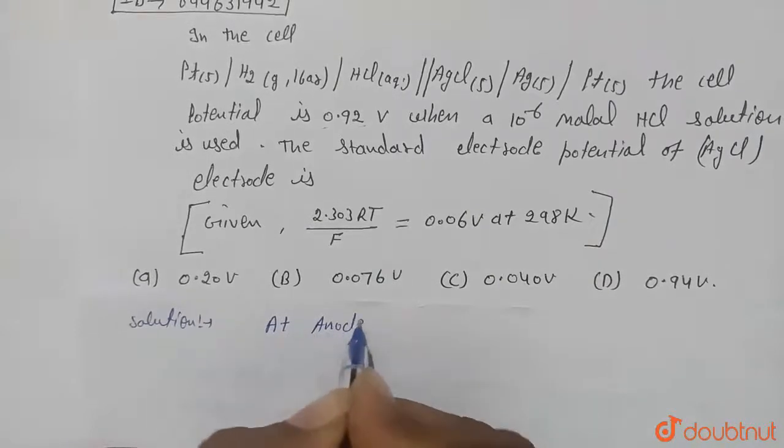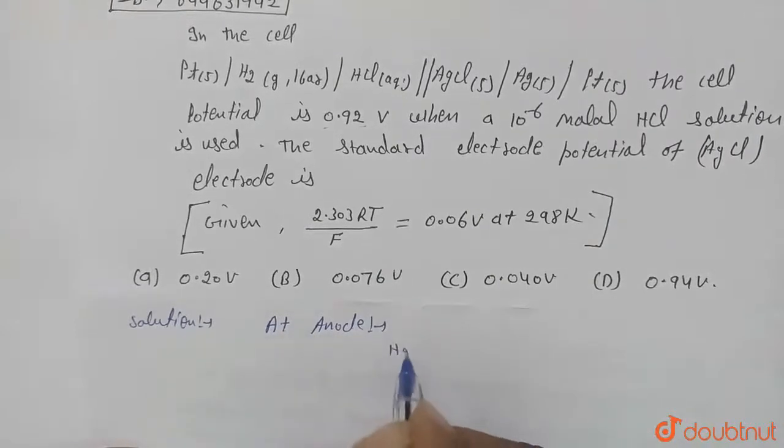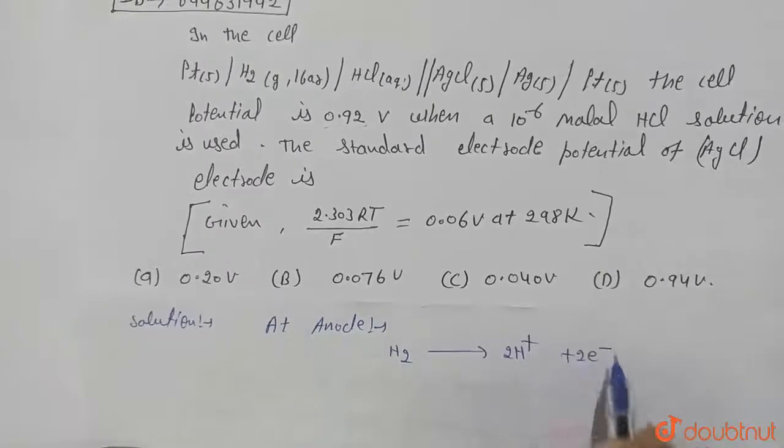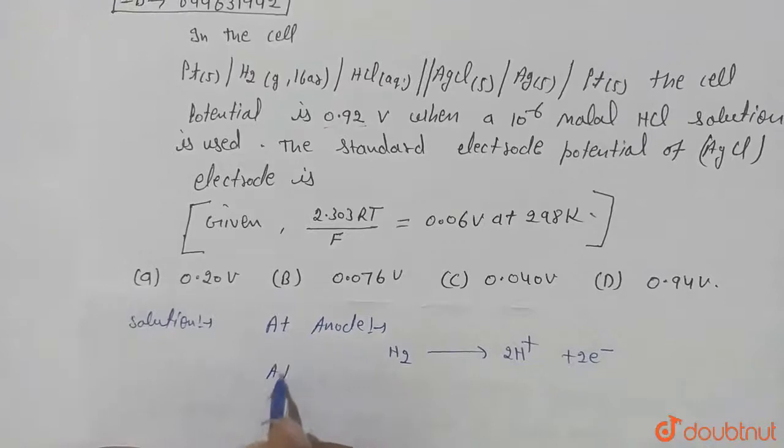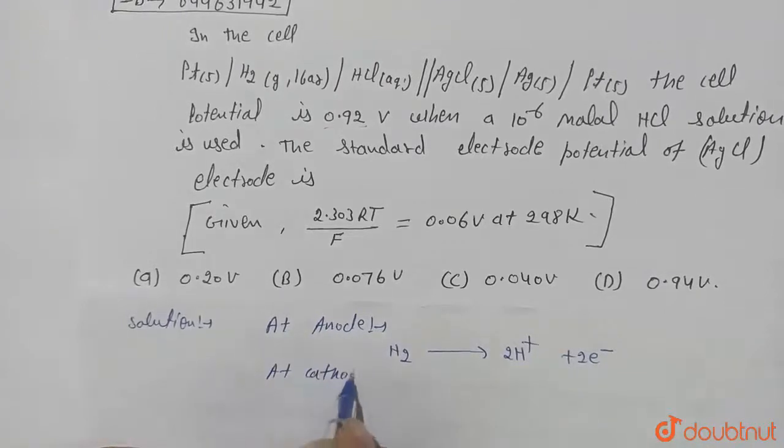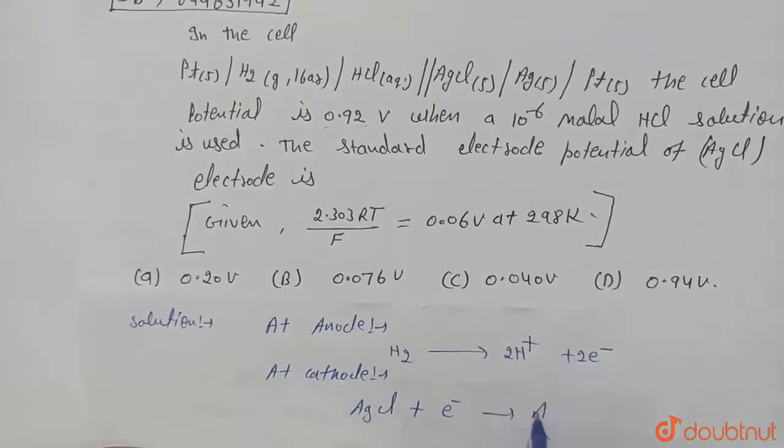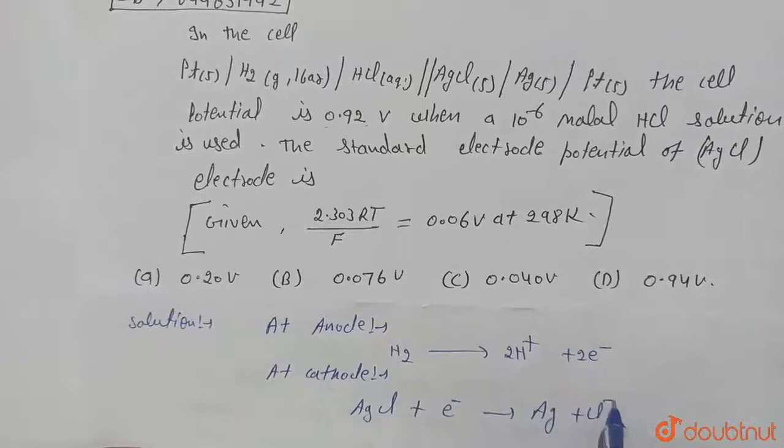At anode, oxidation will take place. That means H2 converts into 2H+ ions plus 2 electrons. Now at cathode, reduction will take place. AgCl plus electron will be converted into Ag plus Cl minus.